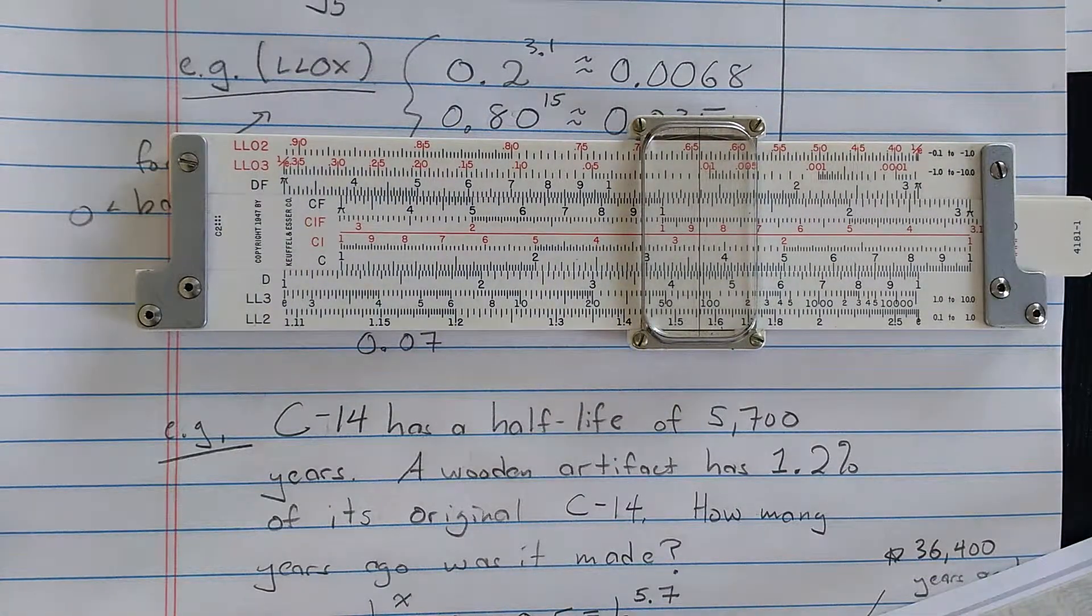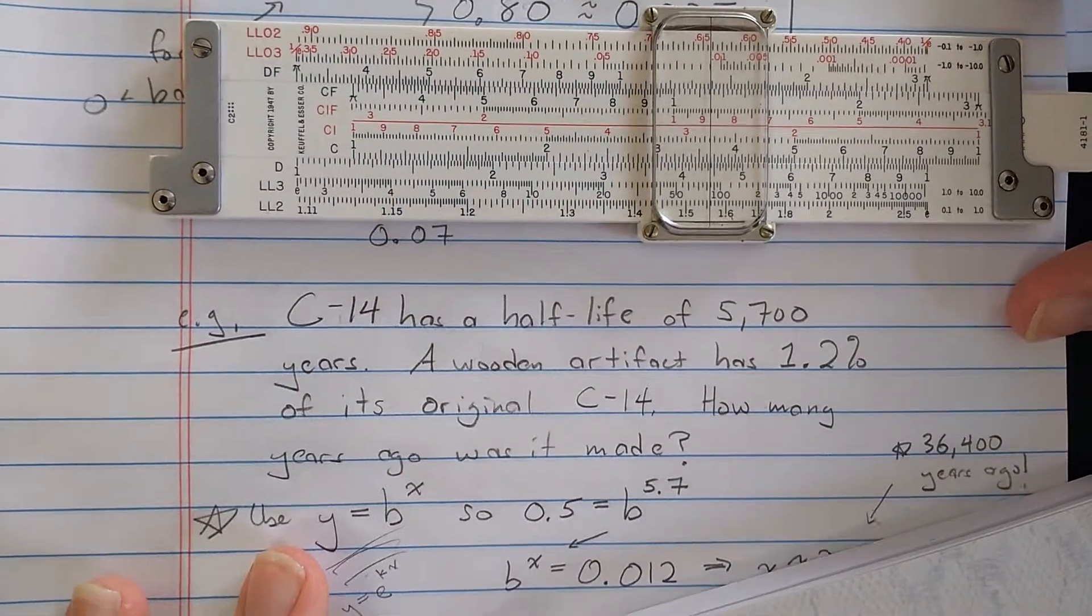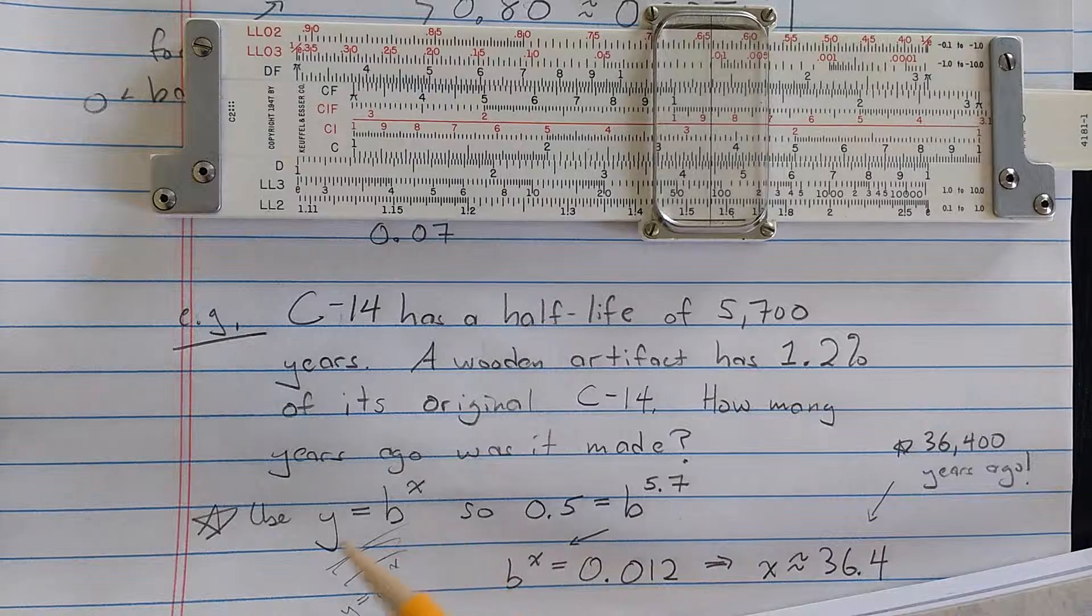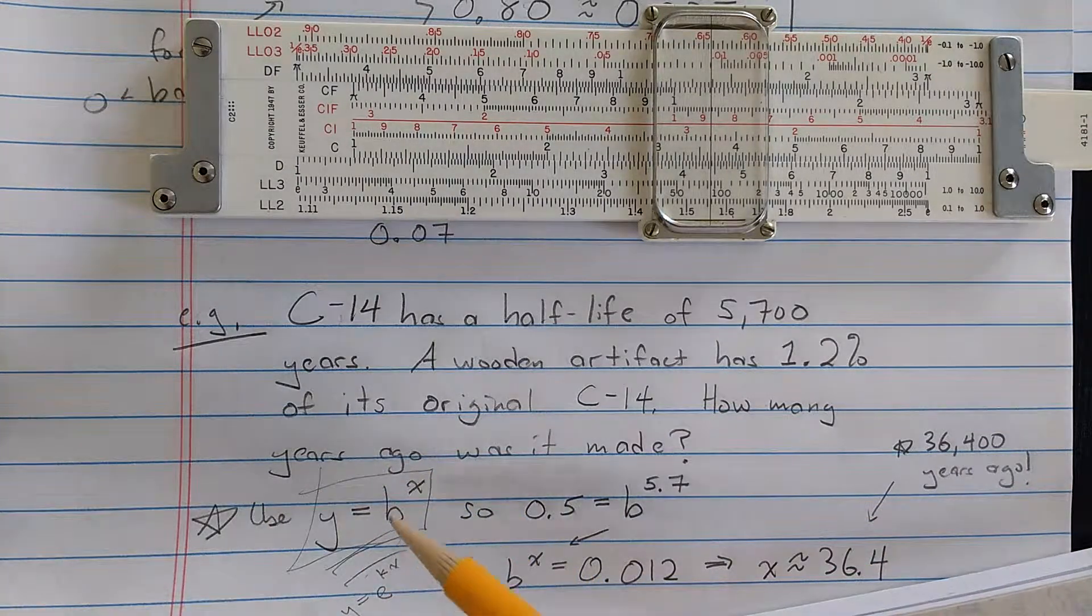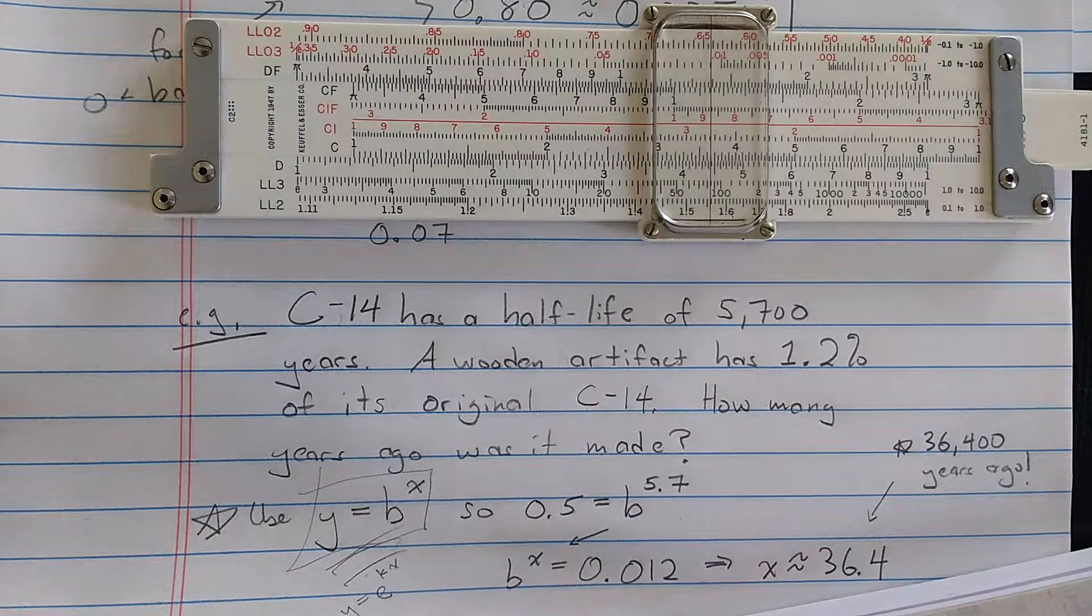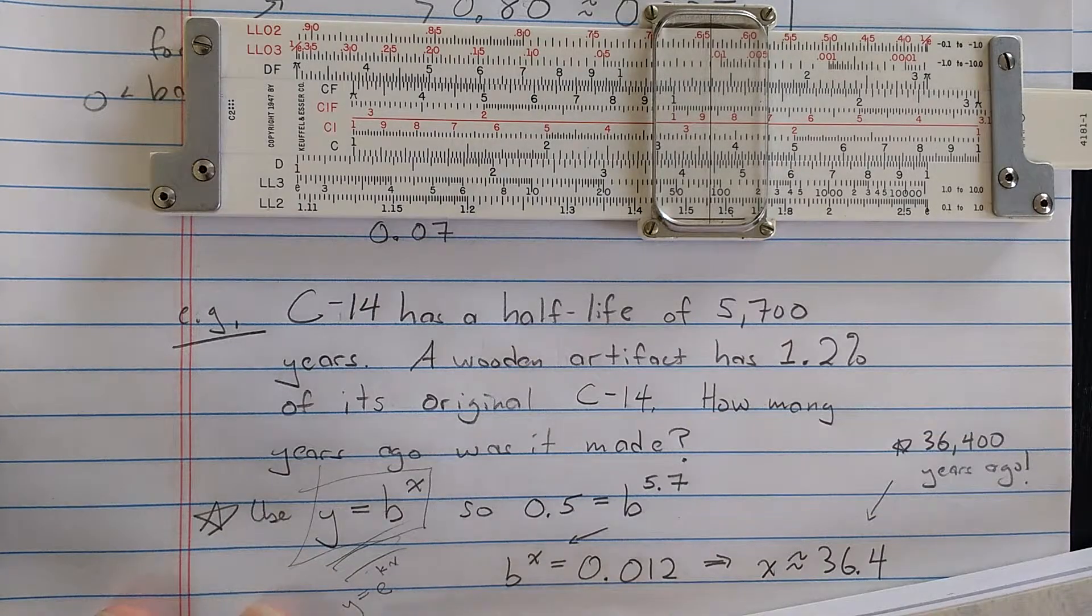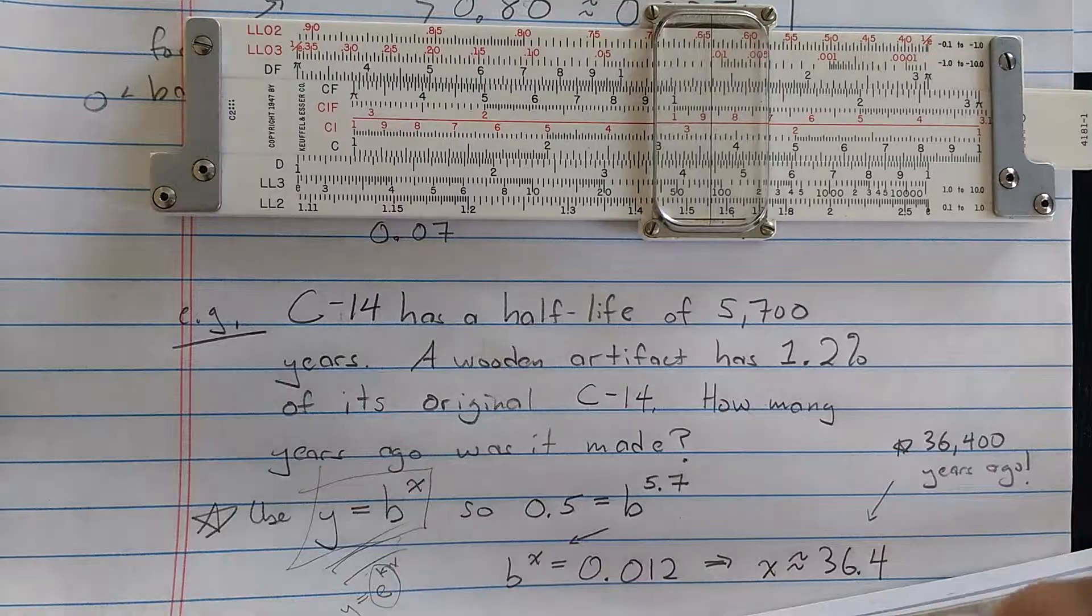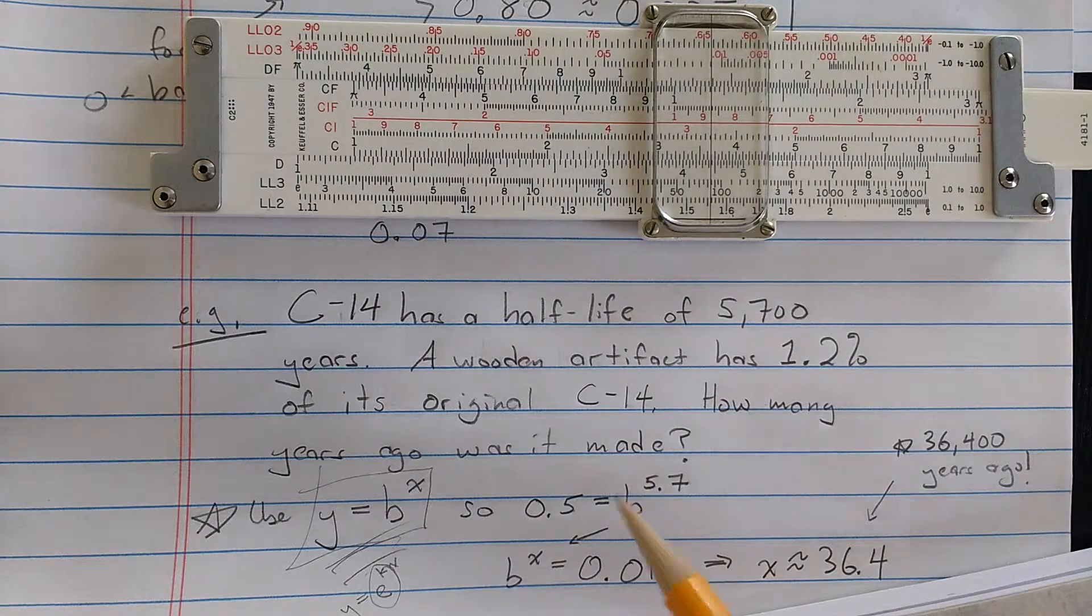Now, how did that work? That was very fast. Well, it turns out if you want to solve an exponential growth or decay problem on the slide rule, you want to use this formulation of exponential growth or decay, or a formulation where you have an A here, initial value or something. Instead of this more modern, popular Y equals E to the KX, this E to the K is the same thing as the B.